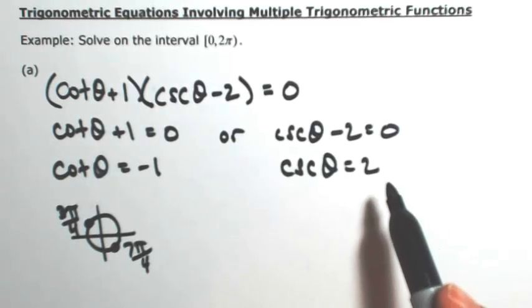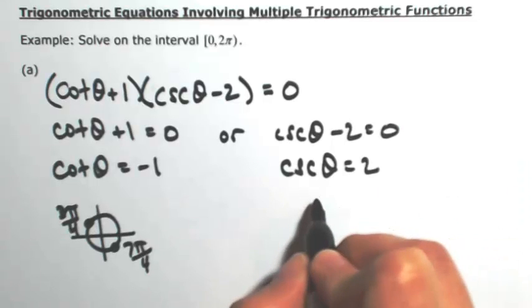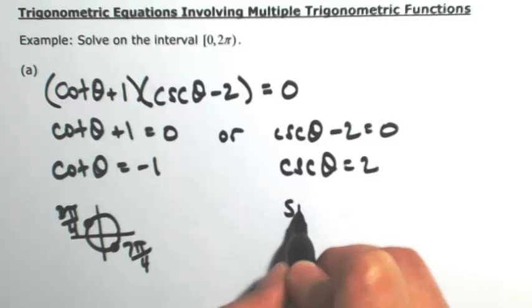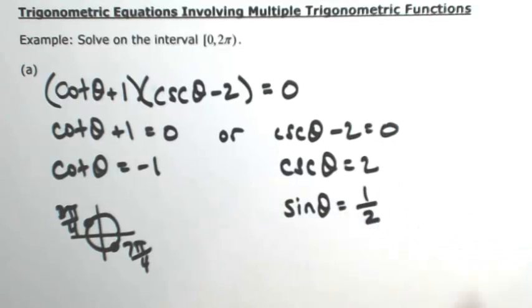Here where cosecant of theta is 2, I'm going to rewrite this as the reciprocal of sine. So the reciprocal of cosecant is sine and the reciprocal of 2 would then be 1 half. So these are equivalent equations.